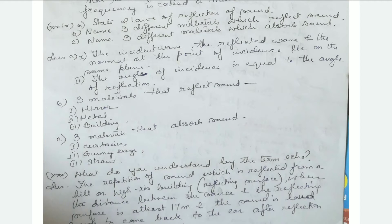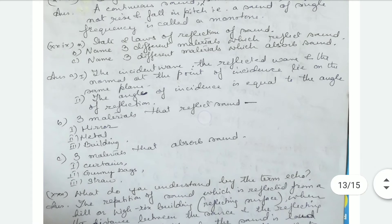Reflection of sound: the first law is that the incident wave, reflected wave, and the normal at the point of incidence lie on the same plane — just like that of light, where the incident ray, reflected ray, and the normal at the point of incidence lie on the same plane.